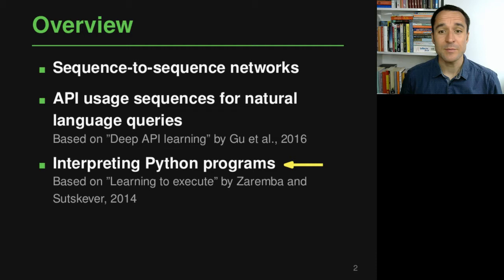What we want to do in this third part is look at another application of sequence-to-sequence networks. This application is about interpreting Python programs. Again, this is based on a research paper from 2014, one of the very early applications of this kind of model to software. If you're interested in more details, please have a look at this paper.